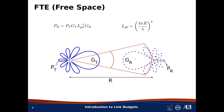The starting point is the Friis transmission equation in free space, and here it is. The equation says that the received power, P_r, equals transmit power, P_t, times transmit antenna gain, G_t, divided by path loss, L_p0, and then times the receive antenna gain, G_r.